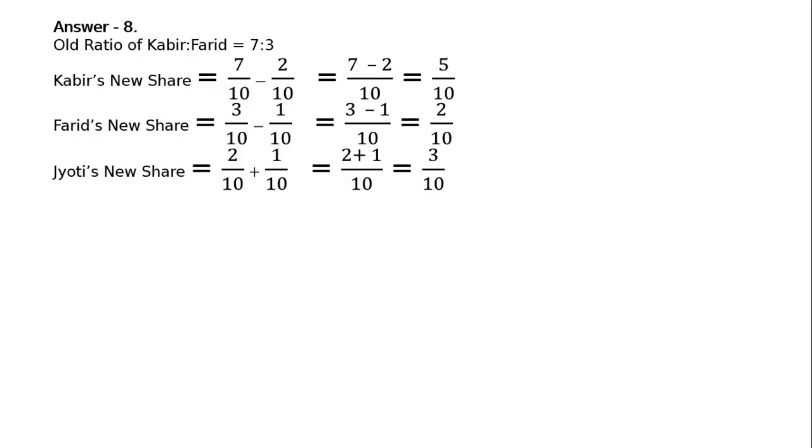Jyoti's new share is equal to 2 by 10, not his old share. 2 by 10 he is getting from Kabir, and 1 by 10 he is getting from Farid. Hence his total share is 2 plus 1 by 10, that is equal to 3 by 10. Hence the new ratio of Kabir is to Farid is to Jyoti is equal to 5 is to 2 is to 3. All the denominators of all the three partners are the same.